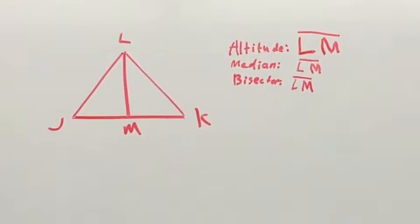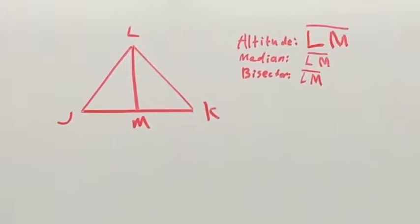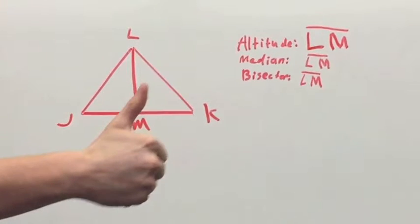A bisector is any segment, line, or plane that intersects a segment at its midpoint. In this triangle, the altitude, median, and bisector are all the line LM.